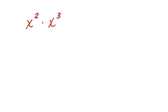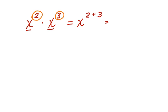Do you know how to work with exponential properties involving products? Let's take a look at an example: x squared times x to the third. When I multiply these two terms together, I'm going to add the exponents. So I have x, because the x is the same — x squared plus cubed equals x to the fifth.